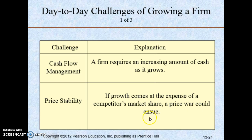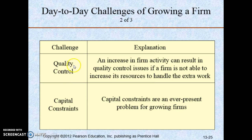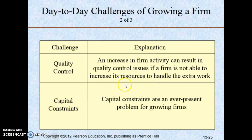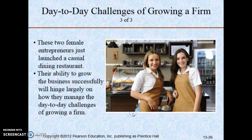Expect retaliation if you want to steal some market share from a competitor. Quality control: an increase in firm activity can result in quality control issues if a firm is not able to increase its resources to handle the extra work. Capital constraints are an ever-present problem for growing firms. Quality control and capital constraints will always be present when you want to grow.